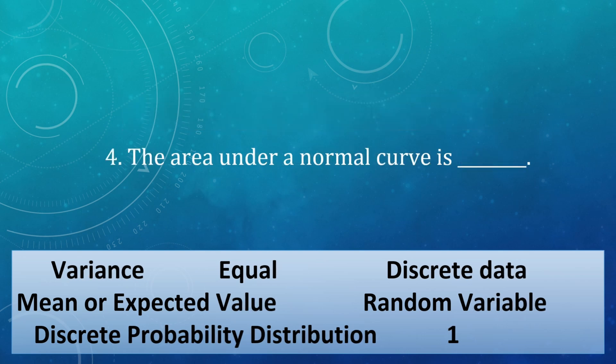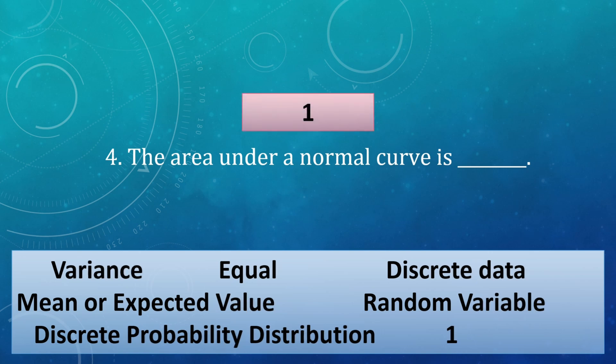Number 4. The area under a normal curve distribution is always equivalent to blank. The answer is 1.